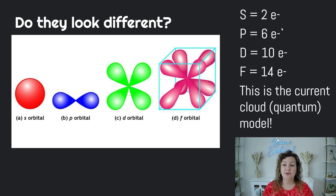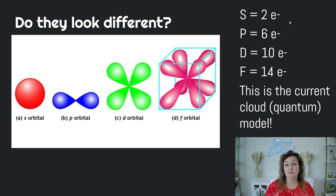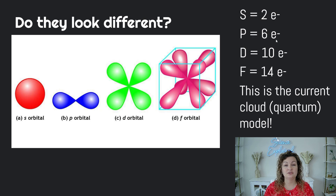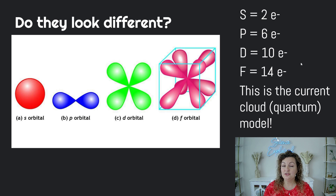I did put a note over here about how many electrons can be found in each one of these orbitals — it's going to be very important. So one more time: S can hold two electrons, P can hold six electrons, the D block can hold ten electrons, and the F block can hold 14 electrons. And this, remember, is going to be our quantum model, or the current modern atomic model.